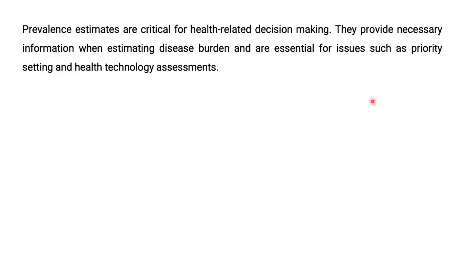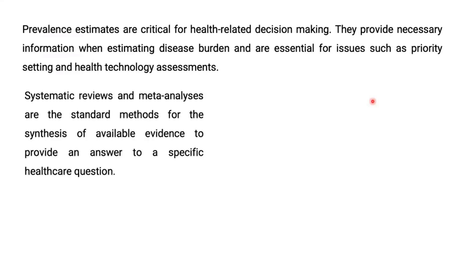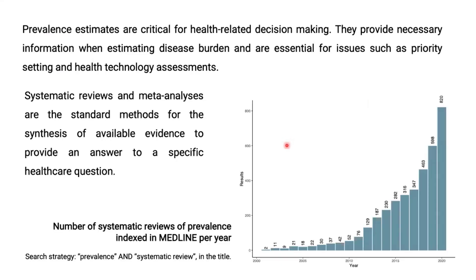Prevalence estimates are essential for health-related decision-making, since they provide necessary information for the estimation of burden of diseases — essential for issues such as priority setting definitions, health technology assessments, and so on. Systematic reviews and meta-analysis are the gold standard methods to synthesize evidence to answer a specific question, which can be about the prevalence of a certain condition. We can observe an increase in published systematic reviews of prevalence over the last decade, and this growth rate is actually higher than the growth rate for systematic reviews in general. So it's important that we discuss methods for these reviews.